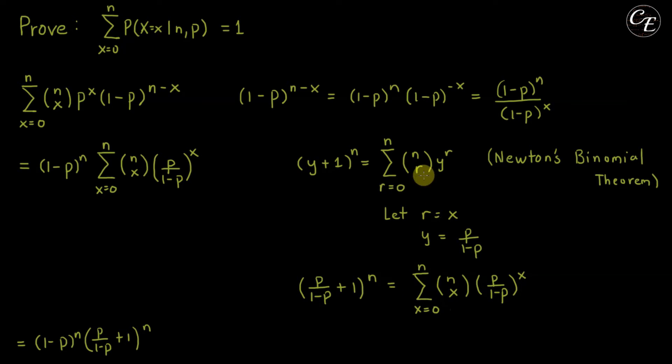Now this one is equal to y plus 1 raised to n, and if we use this transformation, we'll get y which is p over 1 minus p plus 1, raised to n. So we can use this one in place of this summation.